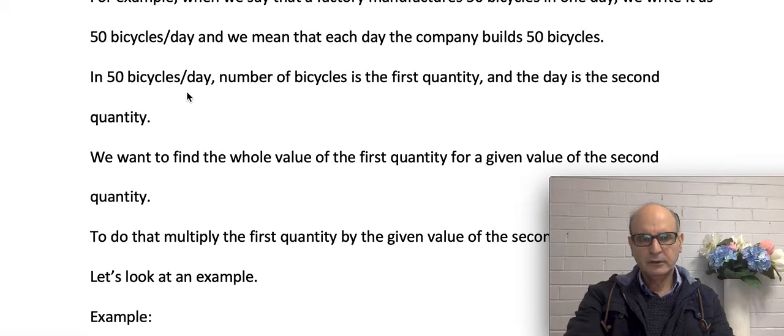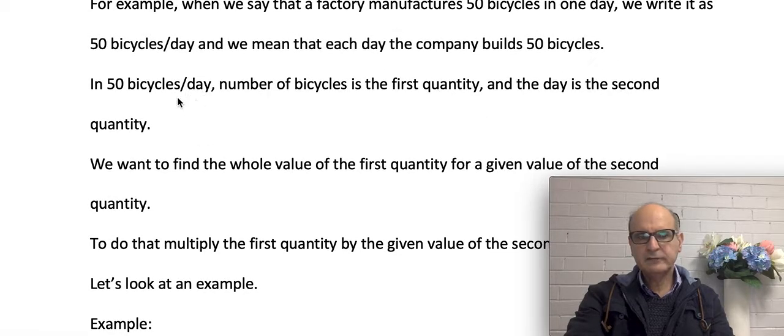So the rule is we need to times the rate, the rate, in this case for example 50, by the quantity of the second, by the number of the second quantity.